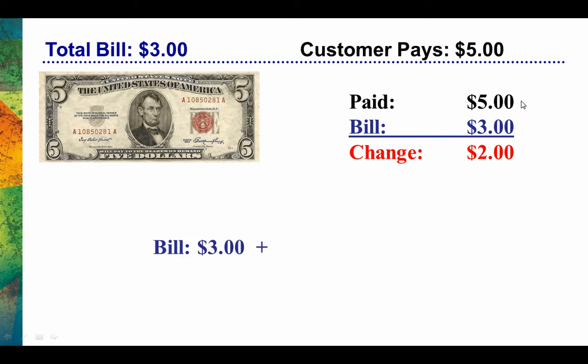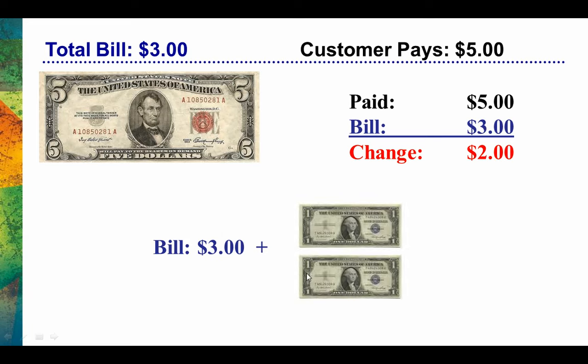One method that is really nice for making sure that you have calculated the change correctly — and it also helps the customer ensure that they're getting back the right amount of change — is to count it back using this method. So you'd say, the bill is $3, I owe you $2, so that would be $3, $4, $5. If we do it right, that amount is always going to equal what they paid, because the bill plus the change is always equal to the amount that they paid.